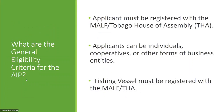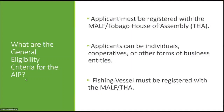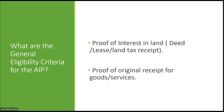What are the eligibility criteria for the AIP? Applicants must be registered with the MALF or the Tobago House of Assembly. Applicants can be individuals, cooperatives, or other forms of business entities. Their fishing vessel must be registered with the Ministry of Agriculture, Land and Fisheries or the Tobago House of Assembly. They must show proof of interest in land — these include your deed, your lease, your land tax receipts — and proof of original receipt for goods and services purchased.